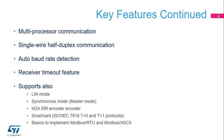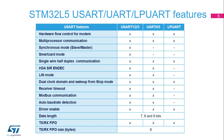The USART features a multi-processor mode which allows the USART to remain idle when it is not addressed. In addition to full duplex communication, single-wire half-duplex mode is supported. The USART also offers many other features including auto-baud rate detection, receiver timeout, and support for several modes which will be described later in the presentation. This table also highlights the differences between the three USARTs, the two UARTs, and the LPUART.